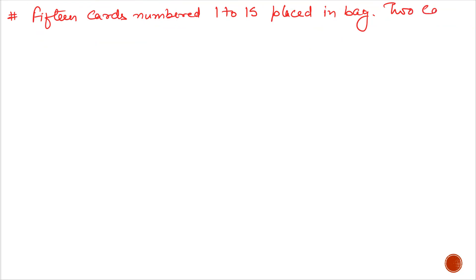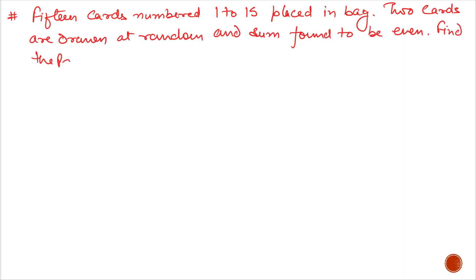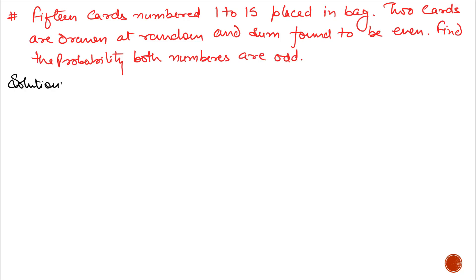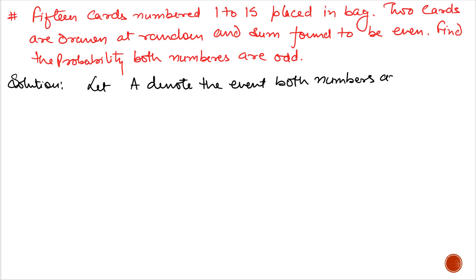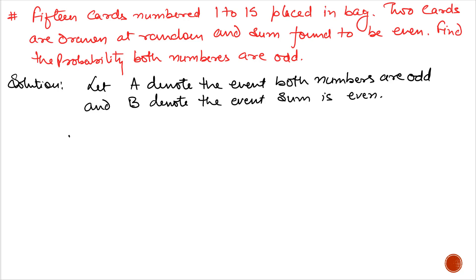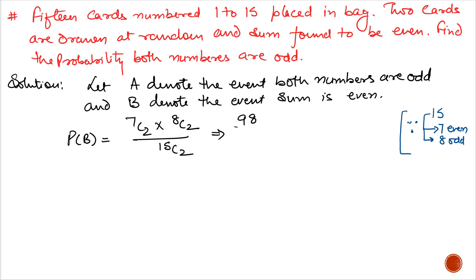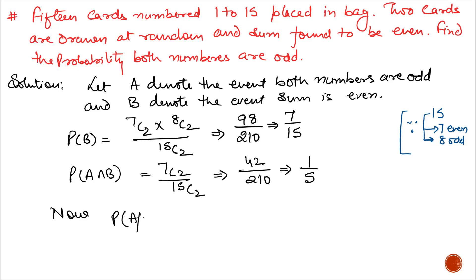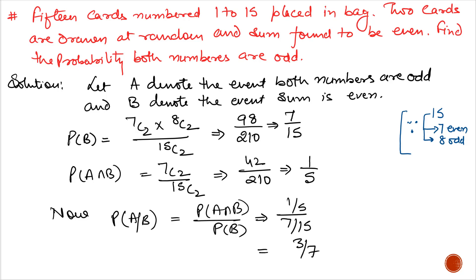Last example. 15 cards numbered 1 to 15 are placed in a bag. 2 cards are drawn at random and their sum is found to be even. Find the probability that both numbers are odd. Let A denote the event that both numbers are odd, and B denote the event that the sum is even. Out of 15 cards, 7 are even and 8 are odd. For the sum to be even, either both are odd or both are even, so probability of B is (8C2 + 7C2) / 15C2, which equals 7/15. Probability of A intersection B means sum is even and both are odd, which is 8C2 / 15C2, equal to 1/5. So probability of A given B is (1/5) / (7/15), and the answer is 3/7.